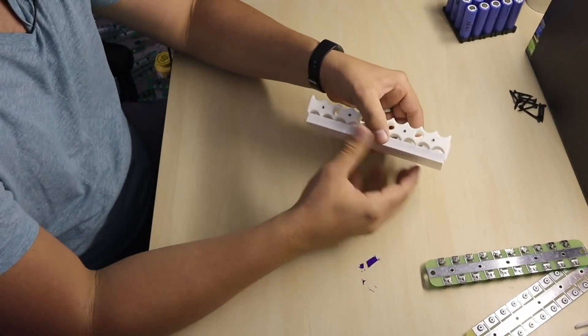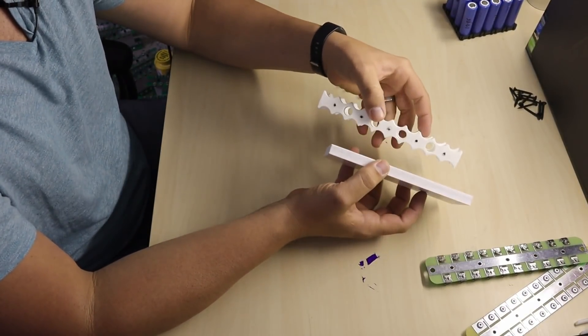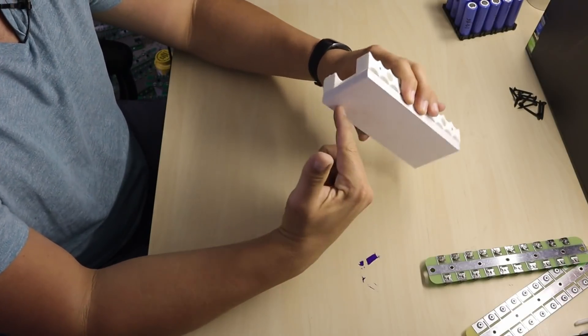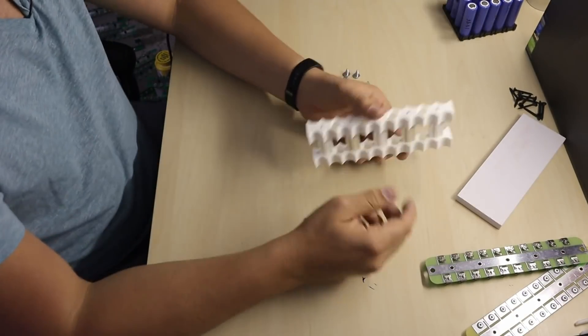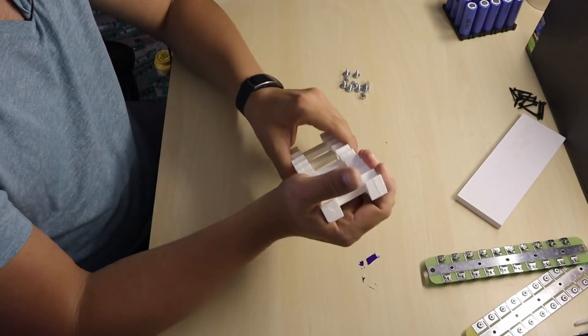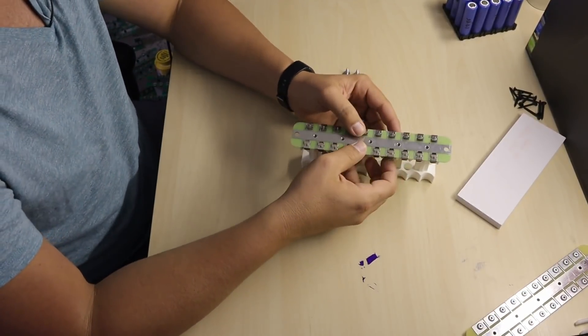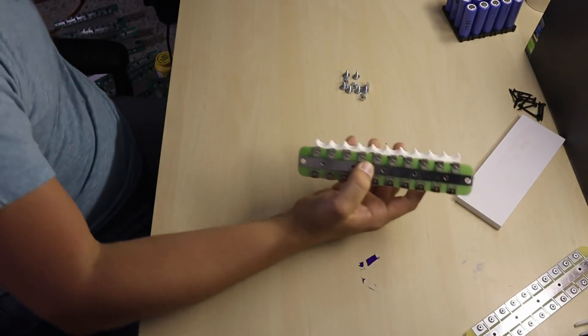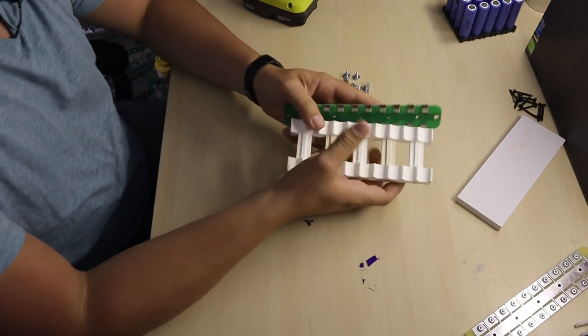As you can see, this is the difference between them. They have the same size when it comes to length, but this one is just so much easier to attach and install. When you assemble one module, all you have is your spacers.